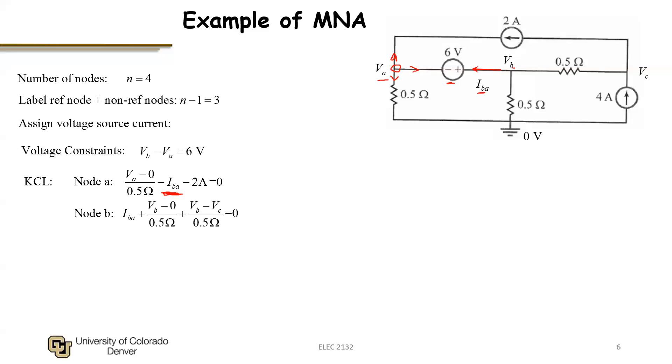For node B, I find that current flowing out sums to zero. Current flowing to the left is I_BA, so I can write that current down. It's unknown, but I still express that as a current flowing out.